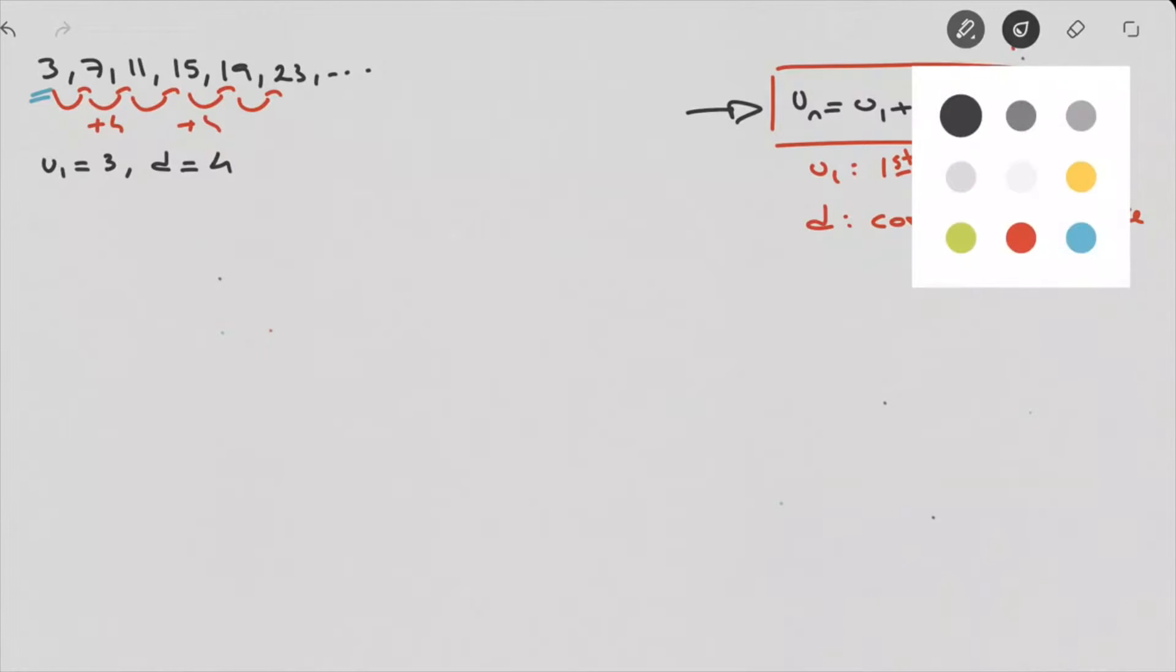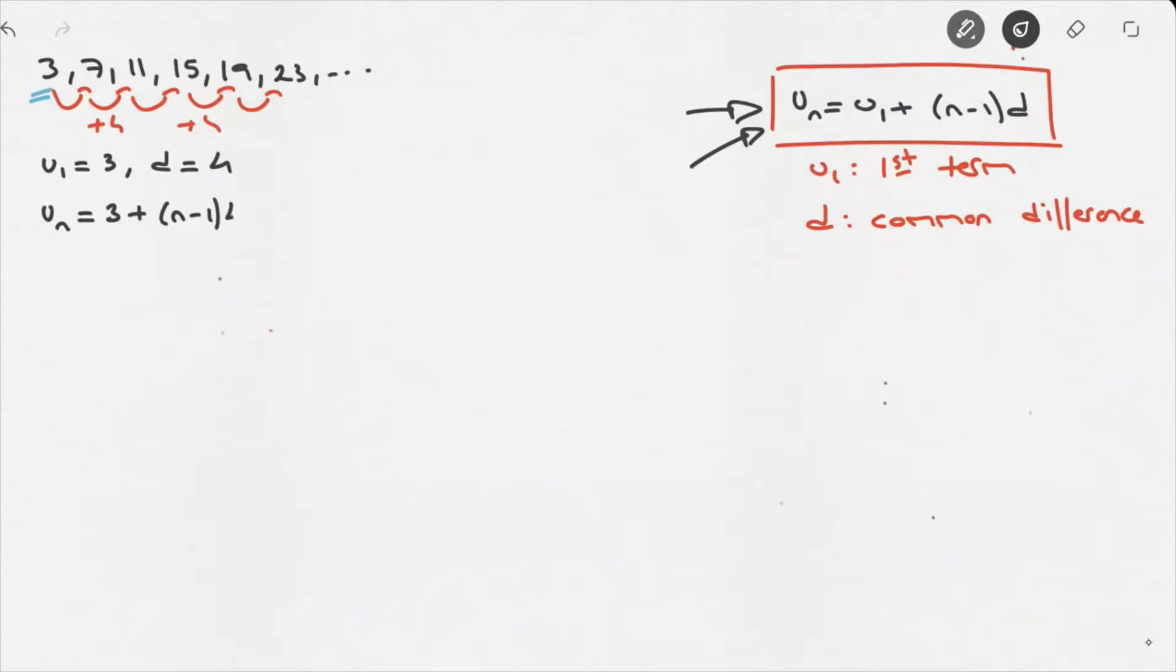Now, all we have to do is replace these two values inside our formula, here. So, let's see, that would be u_n equals, replacing u_1 by 3, 3 plus (n minus 1) times d, since d is 4, that's 4 here.